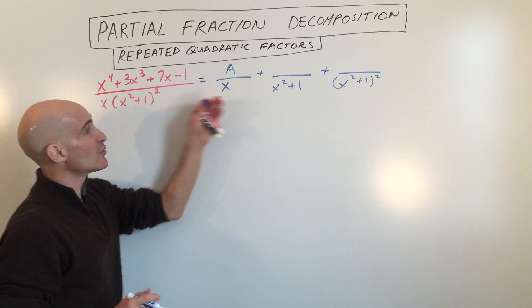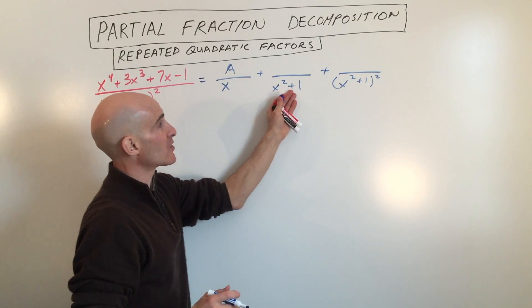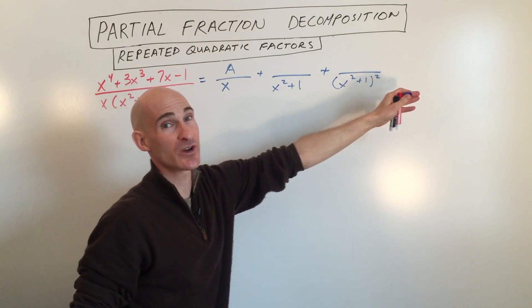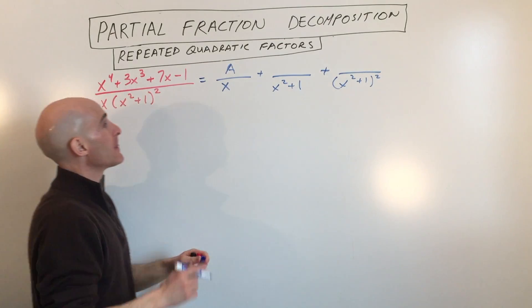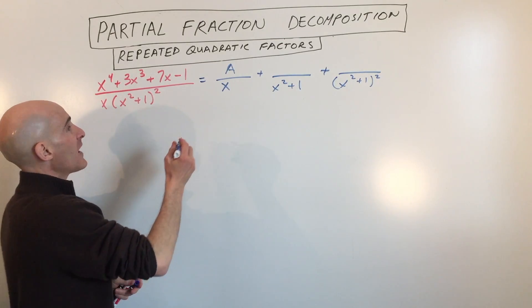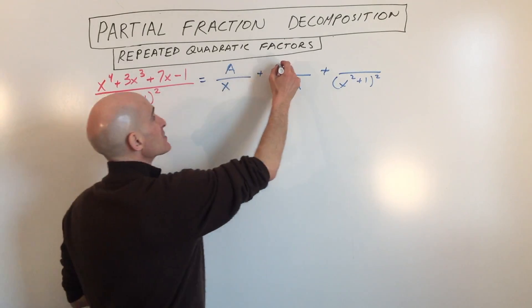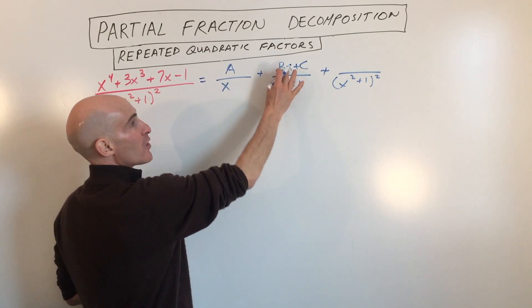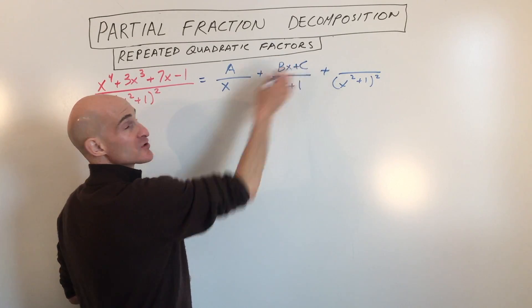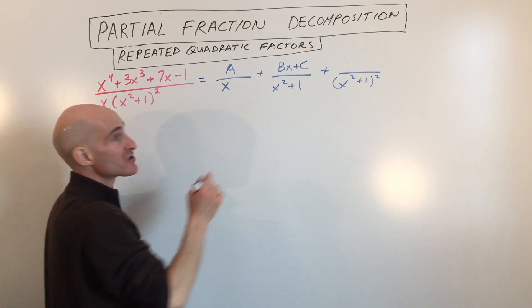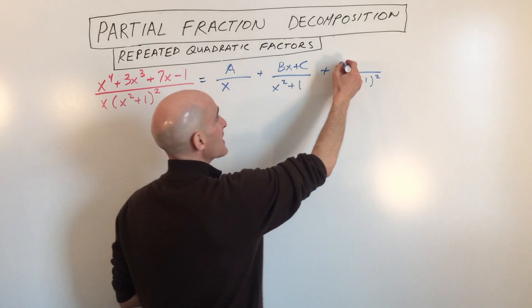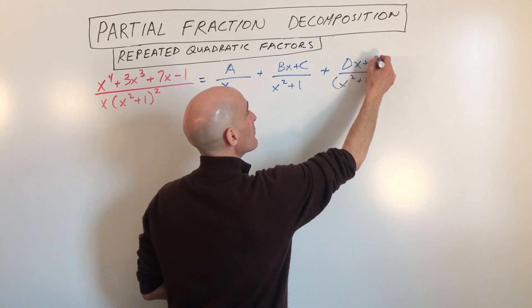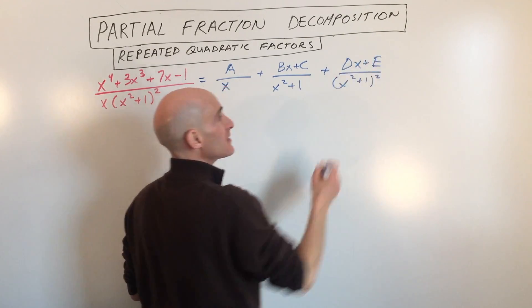If it was cubed, we would need (x² + 1), (x² + 1) squared, and (x² + 1) cubed. So what we have here is the numerator will be Bx + C — notice that's one degree less, going in descending order down to the constant — and then Dx + E for the squared term.